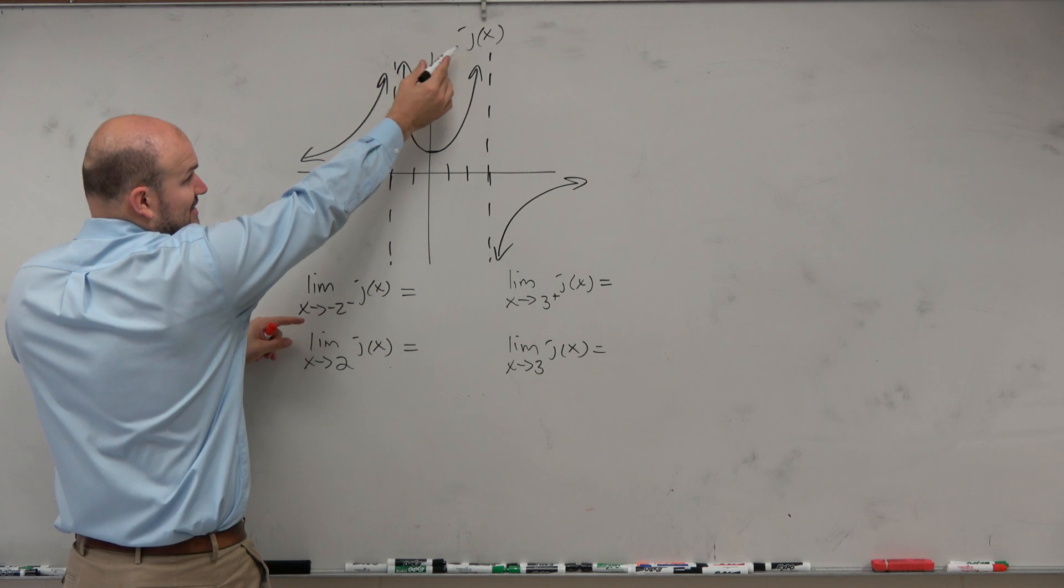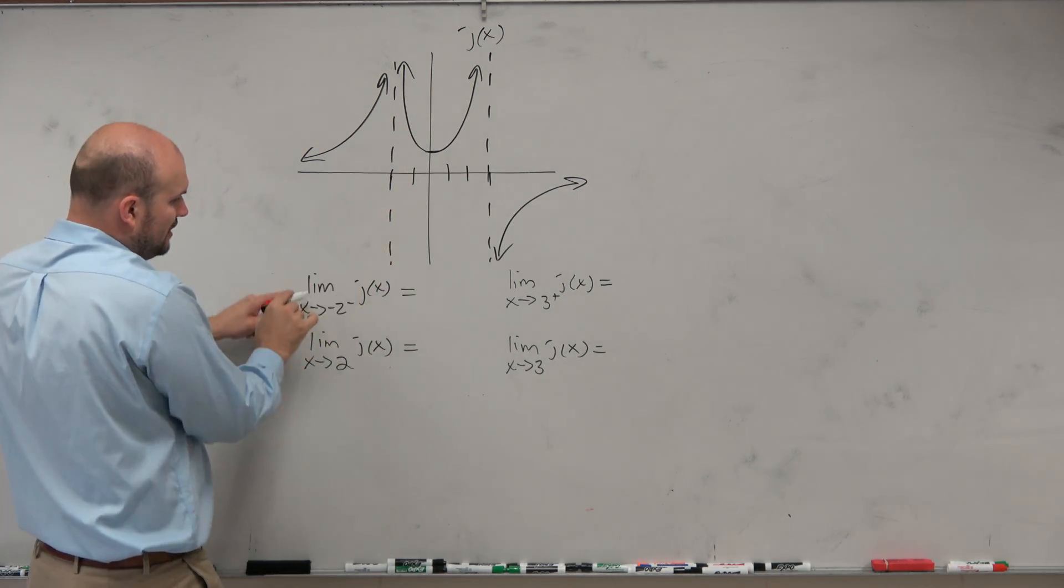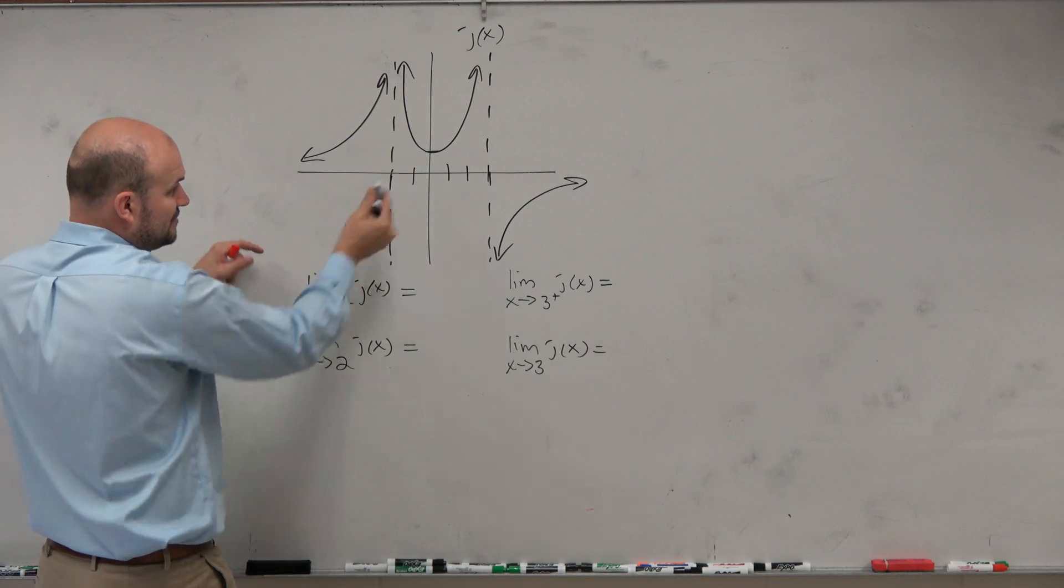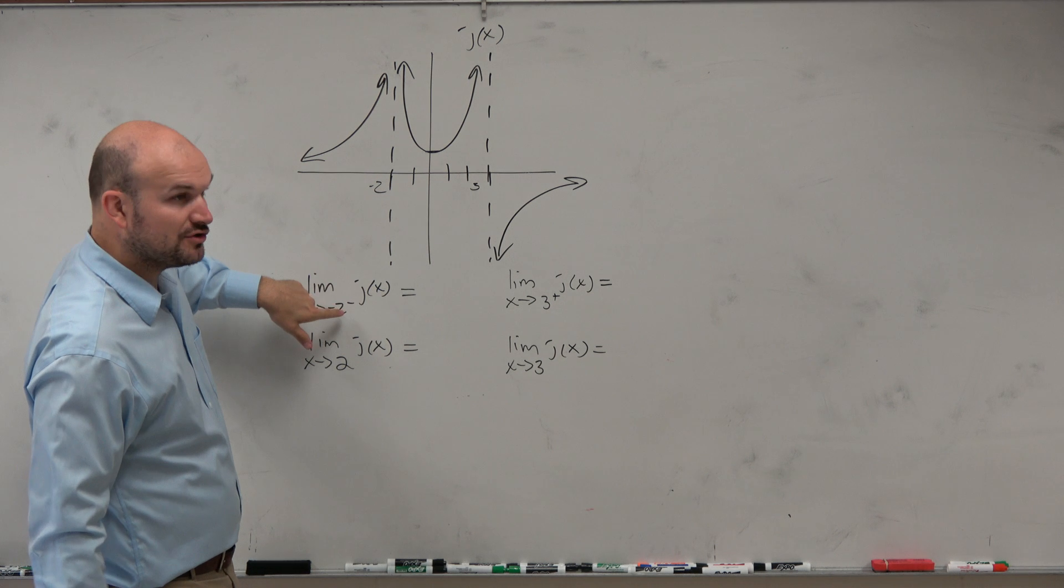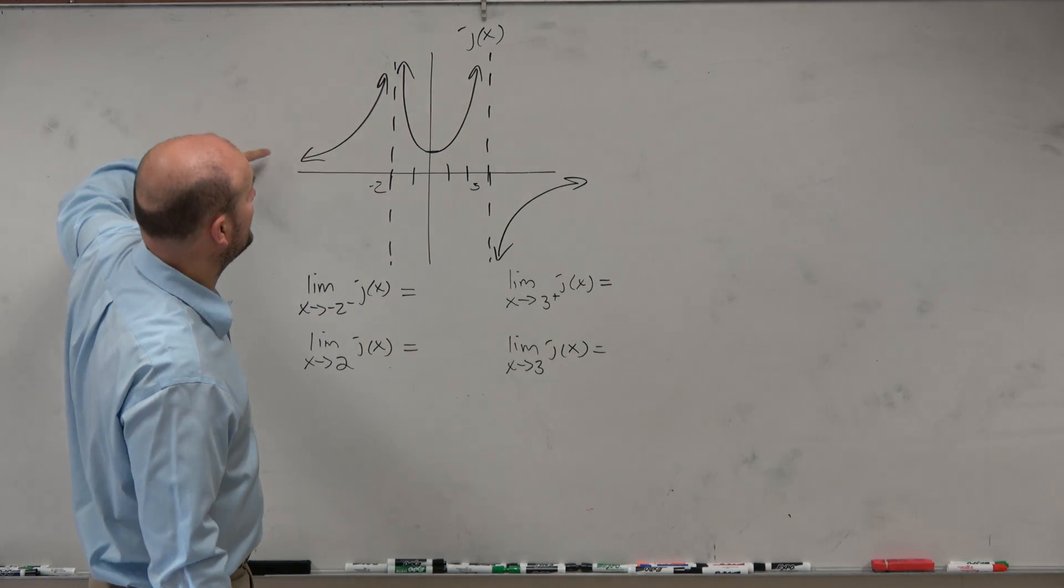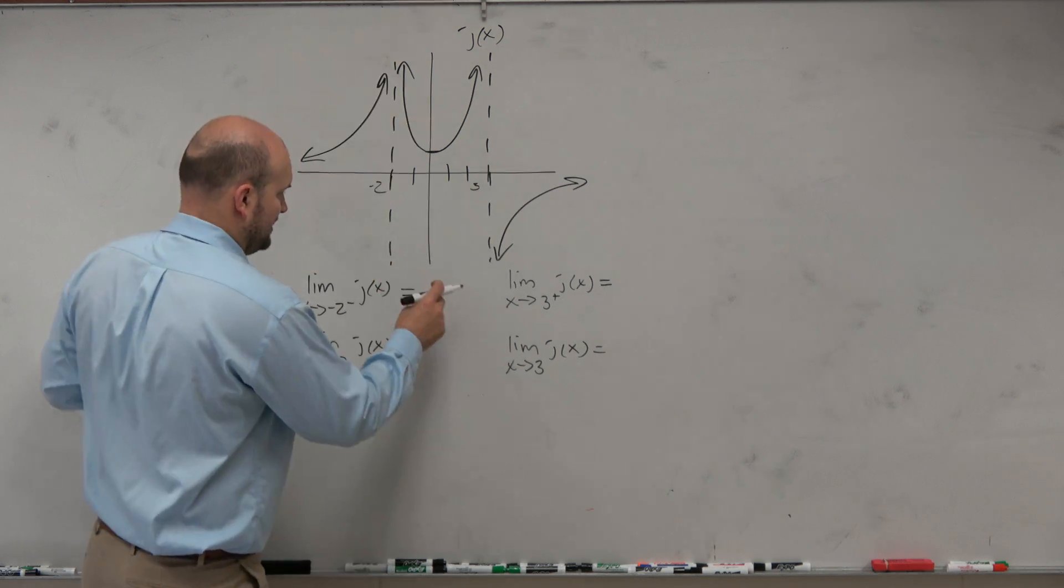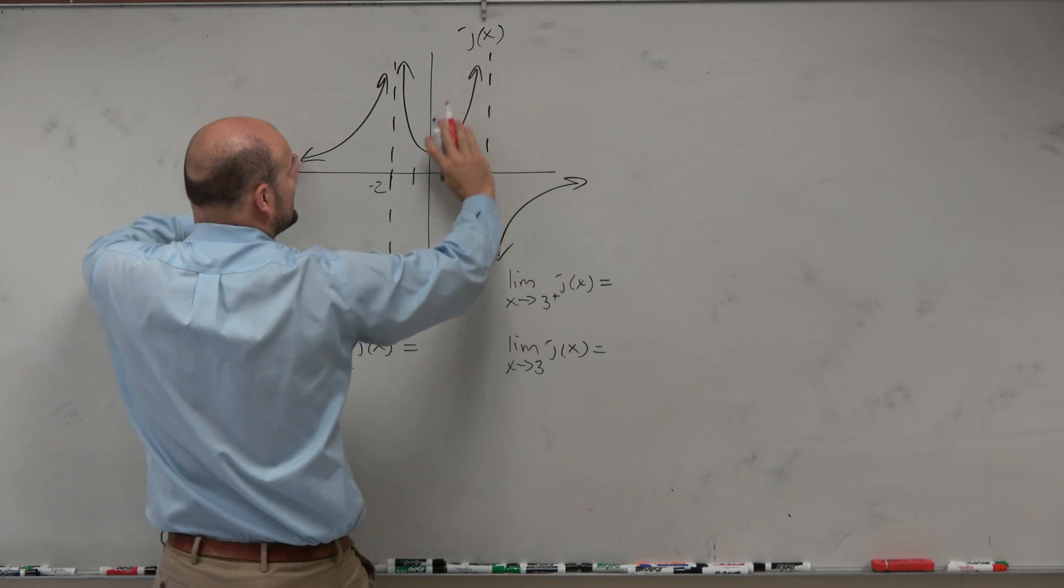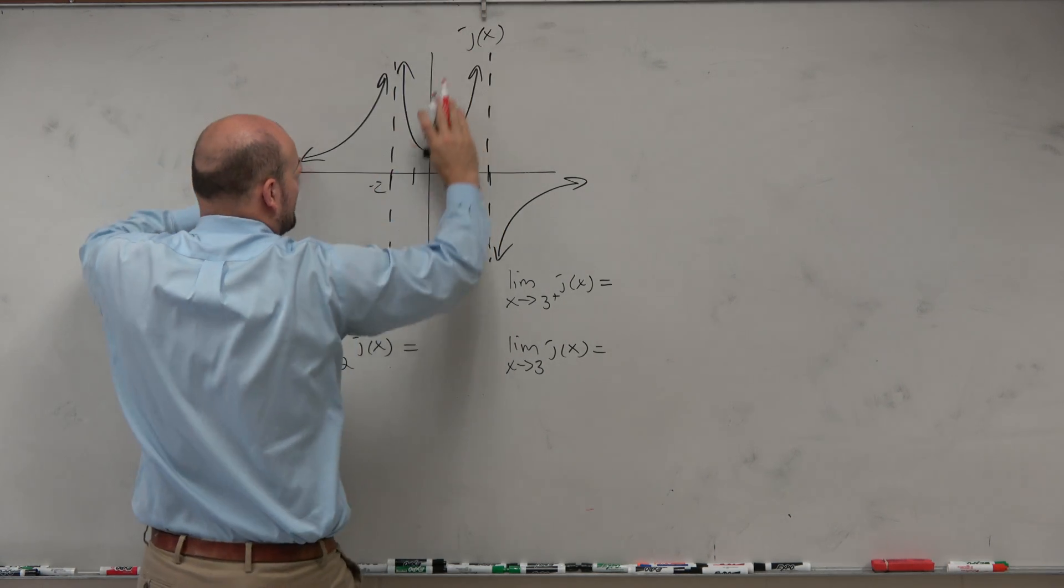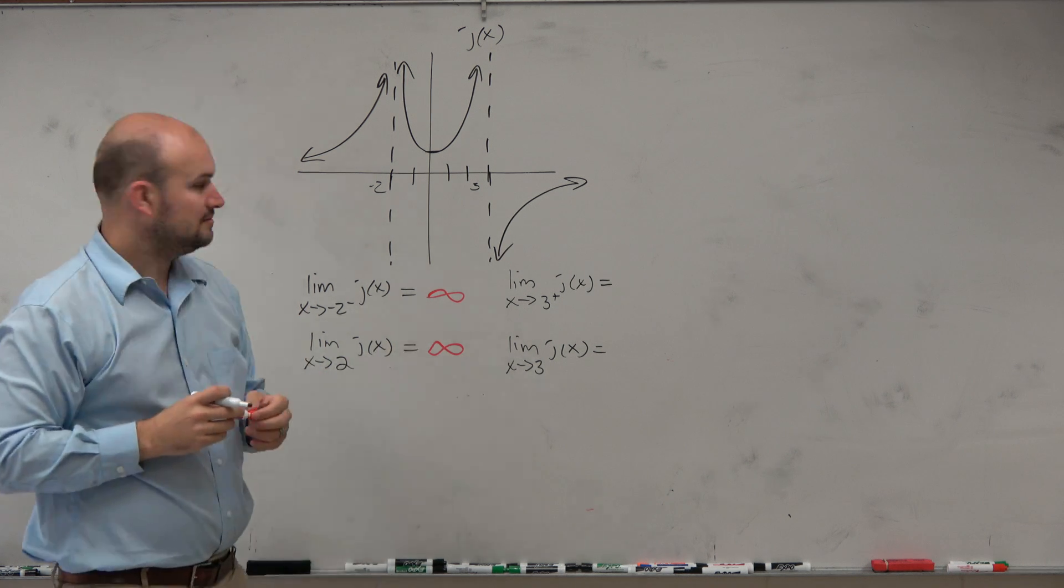So the limit of j of x, this is the name of this function, j of x. It looks kind of confusing, but it's just all one function. The limit as x approaches negative 2. So if here's negative 2, that would be 3. So as we're approaching negative 2 from the left, we are approaching positive infinity. As we approach 2, that means from the left and the right, we are approaching positive infinity.